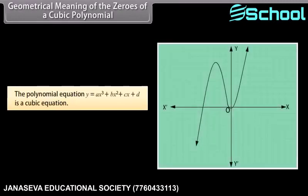Geometrical meaning of the zeros of a cubic polynomial: The polynomial equation y equals ax cubed plus bx squared plus cx plus d is a cubic equation. This is the shape of the graph for a cubic polynomial.